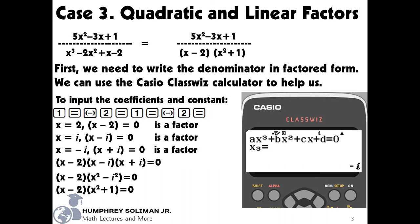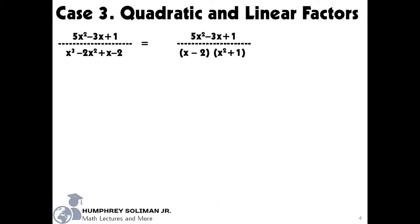We will use this as one of the factors of our denominator. Now that we have written our denominator in factored form, we can write a partial fraction for each factor. Also, since x squared plus 1 is a quadratic factor, we need to write its numerator as a first degree polynomial. This rule will always apply to quadratic factors in partial fraction decomposition.